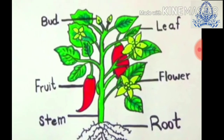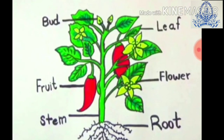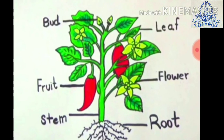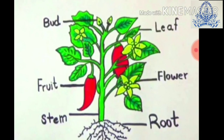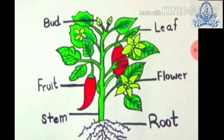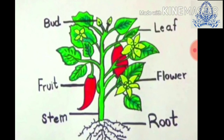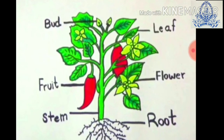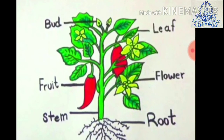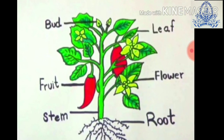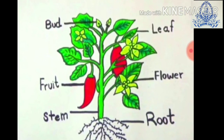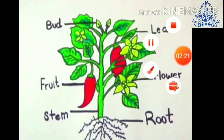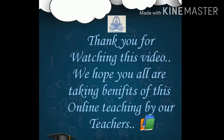Now we are coming to the last portion and it is your homework. Question three: draw a picture of the parts of a plant. Here is bud, leaf, fruit, flower, stem, and root. Now complete the Chapter 1 assignment. We will meet you soon in the next chapter. Bye-bye, see you next time.